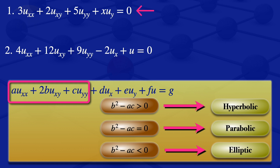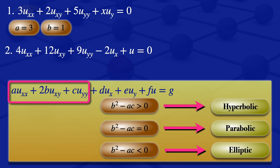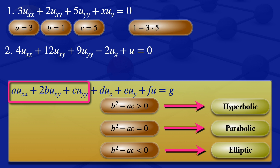Looking at the first partial differential equation and comparing it with the general form, we see that a is 3, b is 1, and c is 5. We evaluate b squared minus ac: that gives us 1 squared minus 3 times 5, which is 1 minus 15, giving us negative 14. Since negative 14 is less than zero, this partial differential equation is elliptic.